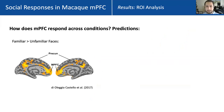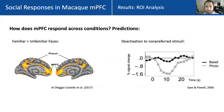We next asked about the response profile across multiple conditions. Our expectations from human research are: first, that we'll see a response to familiar faces over unfamiliar faces; and second, that we'll see a deactivation to non-preferred stimulus categories, namely objects. This deactivation has been observed in prior human studies focusing on socially responsive regions of mPFC, and is also characteristic of other default mode network regions — they tend to deactivate relative to baseline to non-preferred stimulus categories.